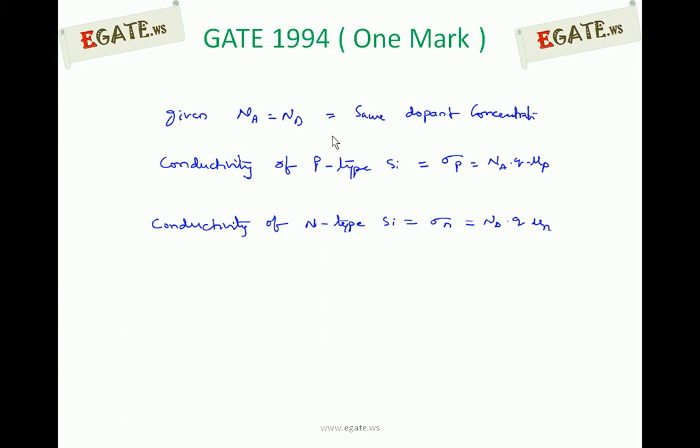P-type normally we are getting by adding trivalent impurities, called acceptor concentration. Na is acceptor concentration used to get p-type. Nd is donor concentration, which are pentavalent impurities used to get n-type semiconductor. Same dopant concentration means Na is equal to Nd.